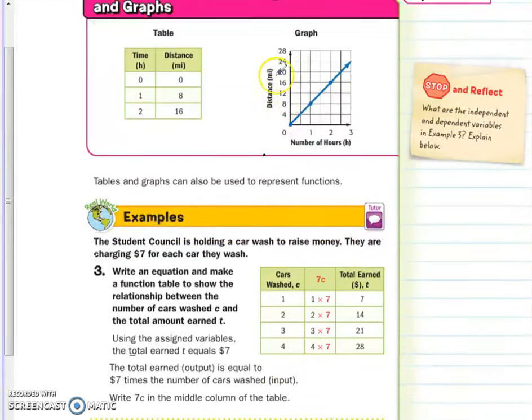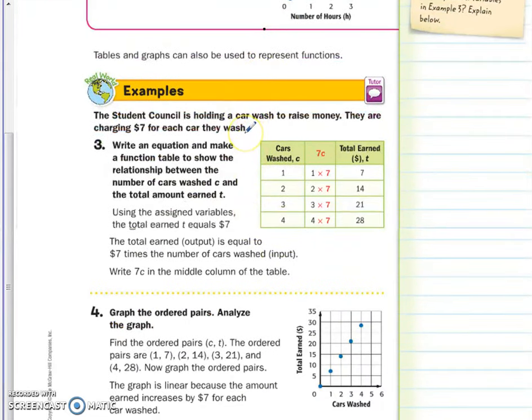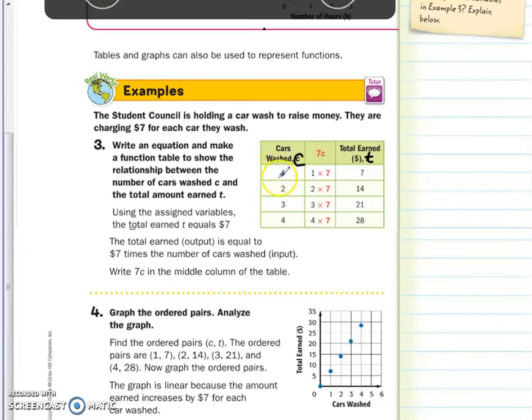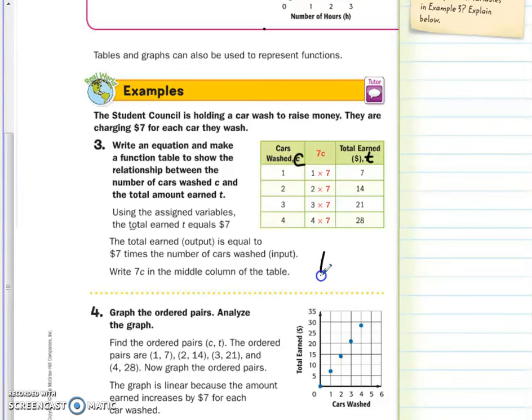In this example for number 3, the student council is holding a car wash to raise money. They are charging $7 for each car they wash. What they want you to do for this example is to write an equation and draw a table. So the table is just like before. We have our C, our input, and our T, our output. Try to use easy numbers. I would have preferred you use 0 here. They sort of skipped 0 and used the 1. That's okay. Now if you notice, every C, I have to multiply by 7 to get to T. So that's why T is equal to 7 times whatever C is. So this is your equation.